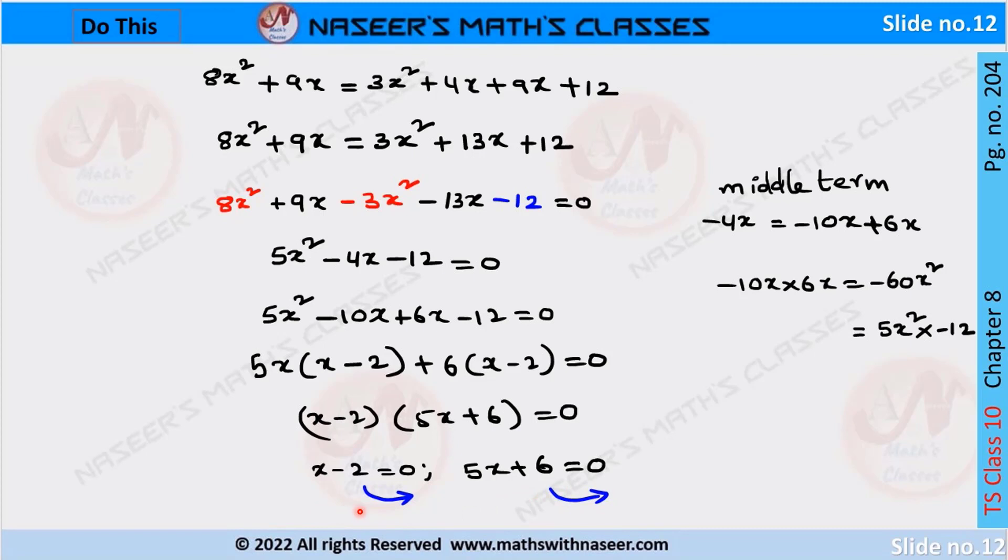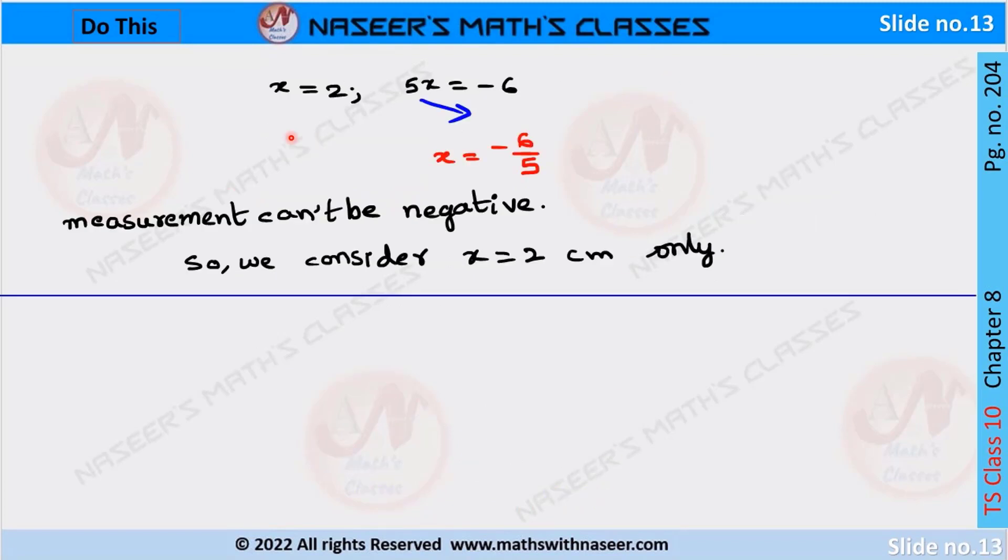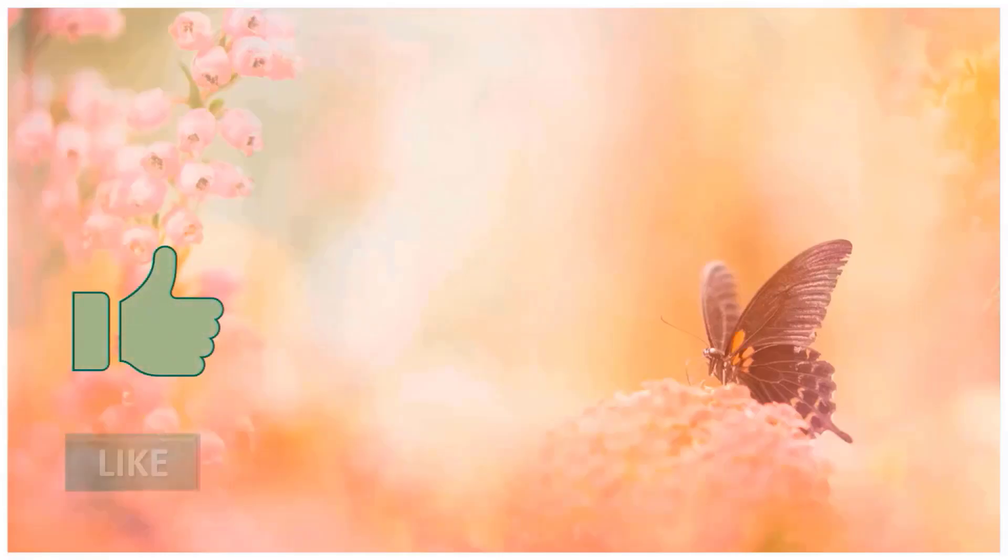Now transpose minus 2 from the left-hand side to the right-hand side, and plus 6 from the left-hand side to the right-hand side. After transposing, we get X equals 2 and 5X equals minus 6. Now we transpose 5 from the left-hand side to the right-hand side. We get X equals minus 6 by 5. Here, minus 6 by 5 is negative, so we consider only the positive value X equals 2.